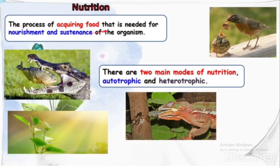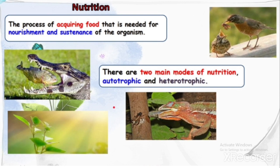Nutrition is the process of acquiring food needed for nourishment and sustenance of the organism. For example, a crocodile catching a fish, or plants making food through photosynthesis using sunlight, carbon dioxide, and water. There are two main modes of nutrition: autotrophic — where organisms produce their own food — and heterotrophic — where organisms depend on other organisms for food.